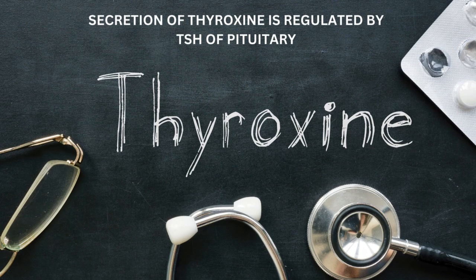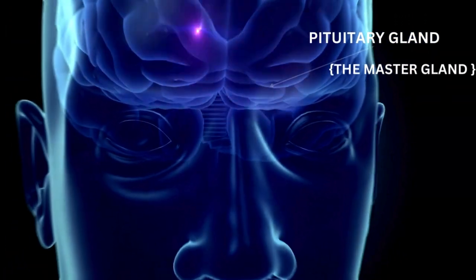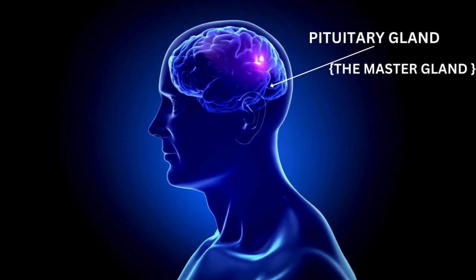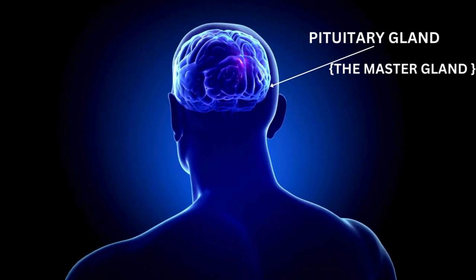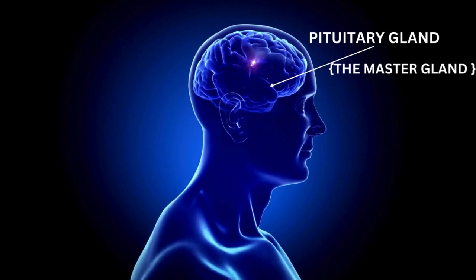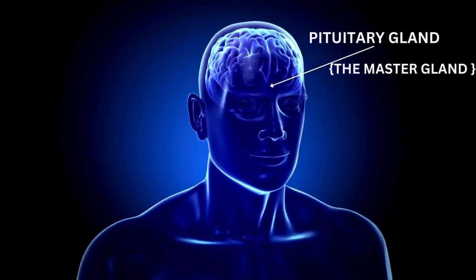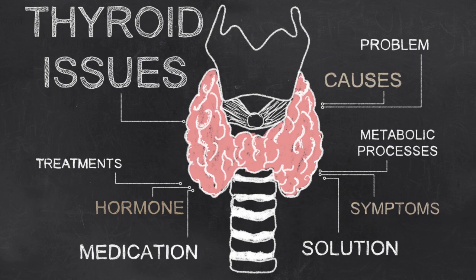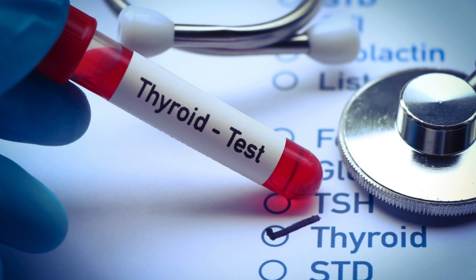These thyroid glands produce an important hormone called thyroxine, which is regulated by the TSH — thyroid stimulating hormone — of the pituitary gland. The pituitary is the master gland that regulates the body's thyroid maintenance, controlling how much thyroxine needs to be released into the blood according to necessity. The thyroid test covers TSH, T3, and T4. Now let's get into the thyroid issues and irregularities.